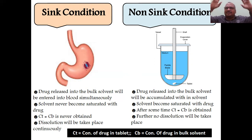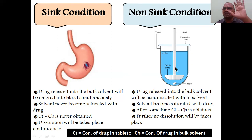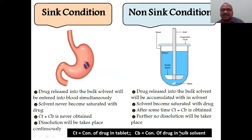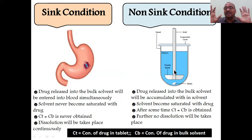After a certain time, the solvent becomes saturated with the drug. The condition ct = cb is reached, where ct is the concentration of drug in the tablet and cb is the concentration of drug in the bulk solvent. An equilibrium is achieved and the entire solvent gets saturated.